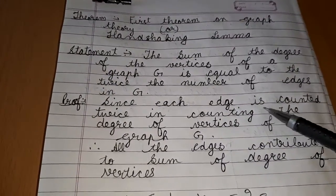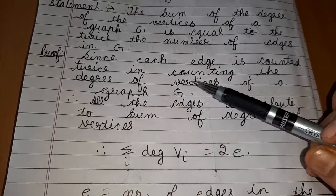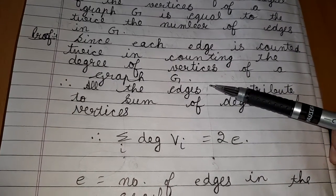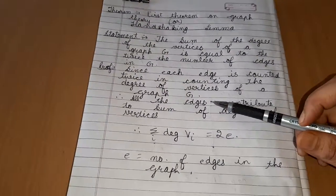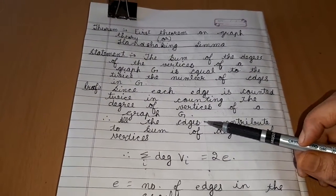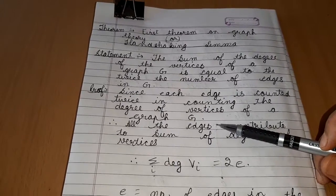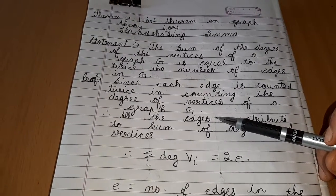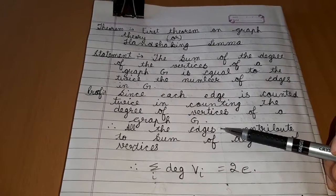Proof: since each edge is counted twice in counting the degree of vertices of a graph G, since the degree of a vertex is the number of edges incident with that vertex.